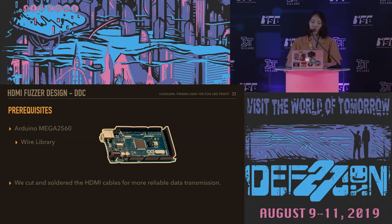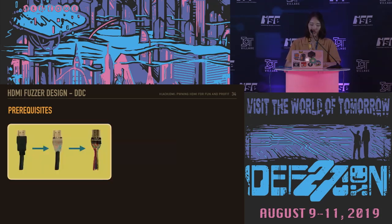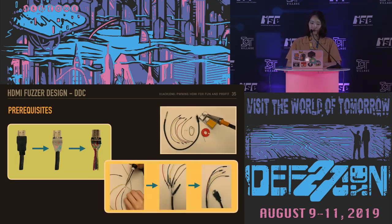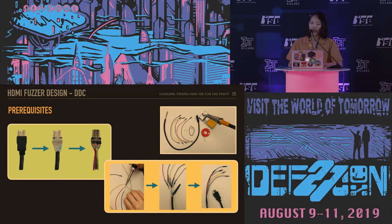We used the Arduino Mega 2560 and transmitted data via the Wire library provided by Arduino. Also, we cut and soldered the HDMI cable for more reliable data transmission. If you cut the HDMI cable, you get 19 pins and a wire connected to each pin. We connected the appropriate resistors and wires to the required SCL, SDA, ground, VCC, and HPD locations, and soldered them to make the same cable as shown in the last picture. Then we connected each of the five jumper wires to the Arduino.